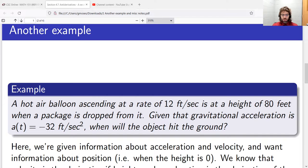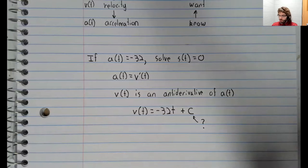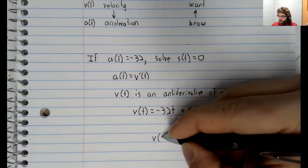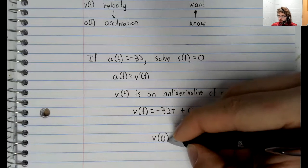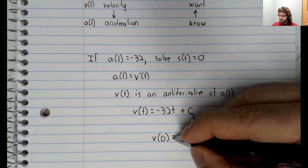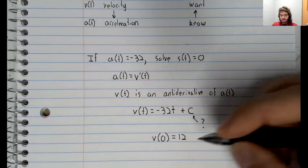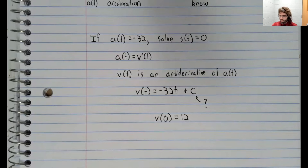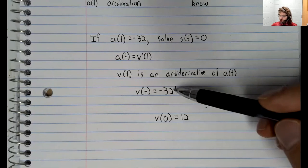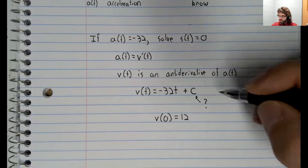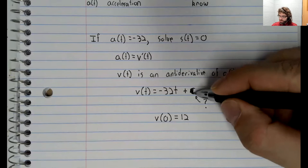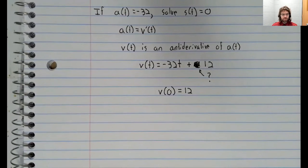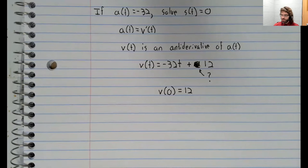In other words, the velocity is 12, and v of zero equals C. So we solve and we find the velocity function.